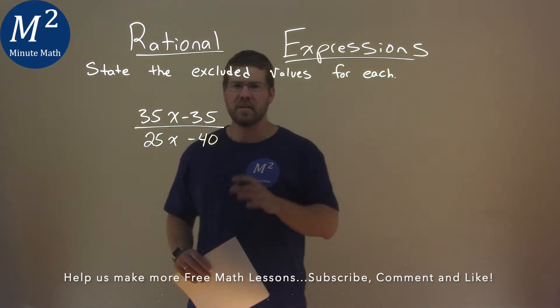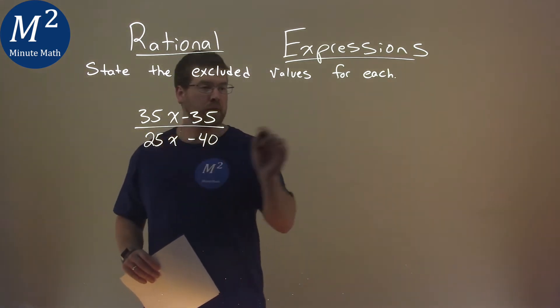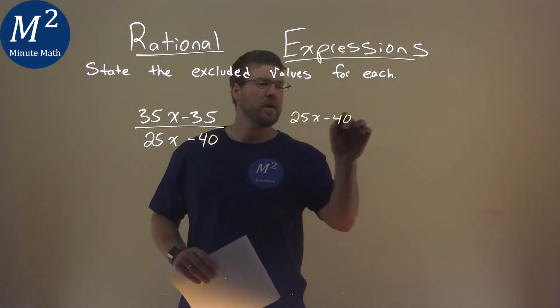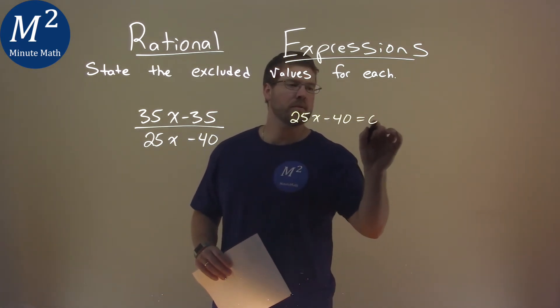Well, first thing here is I want to take my denominator, 25x minus 40, and we're going to set it equal to 0 here.